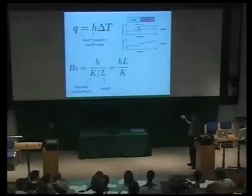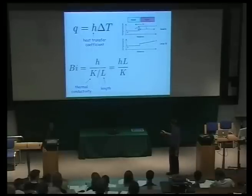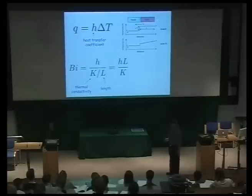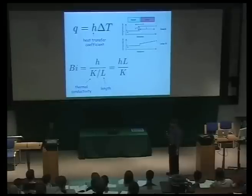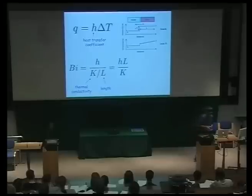If it's very easy to transfer heat across the gap, then it's the conduction of heat in the liquid which will matter. So this is the scenario when the Biot number is large — that means the flow of heat is controlled by conduction of heat through the liquid. On the other hand, if the thermal conductivity is very large, then you'll get a uniform temperature gradient in the liquid and heat flow is controlled by the transfer across the gap. So that's the case for the small Biot number.